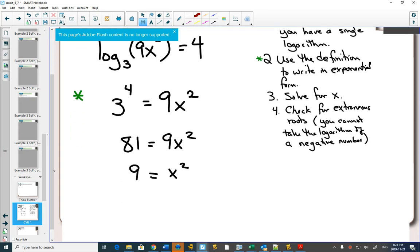And then if I wanted to get the x by itself, I'd square root both sides, which would give me two answers, x equals 3 and x equals negative 3.